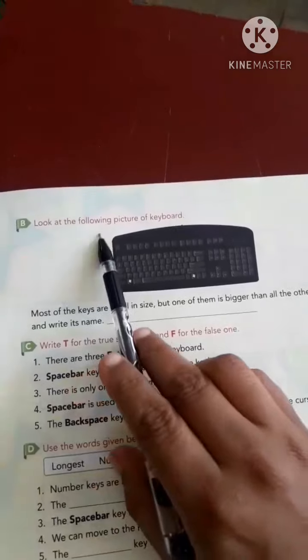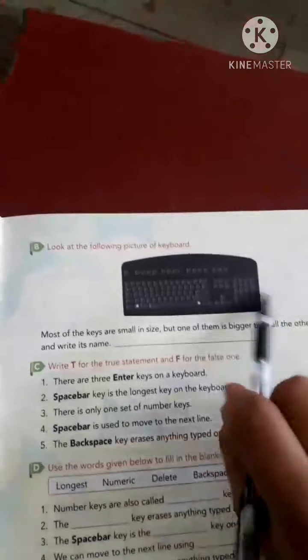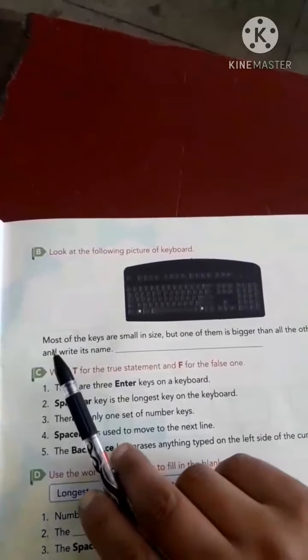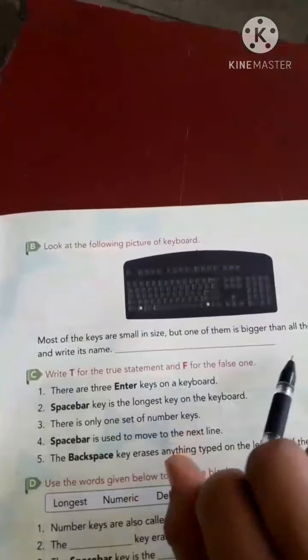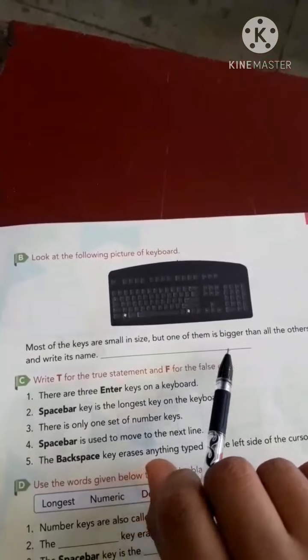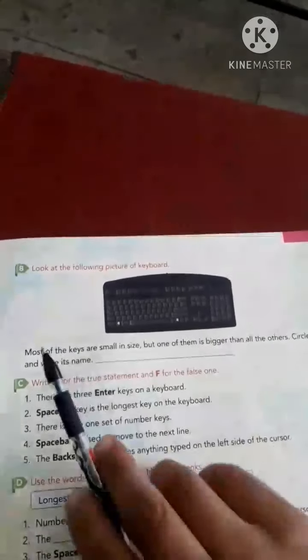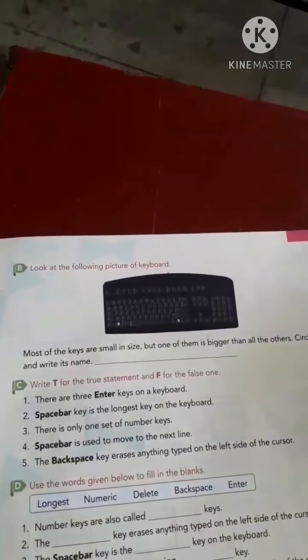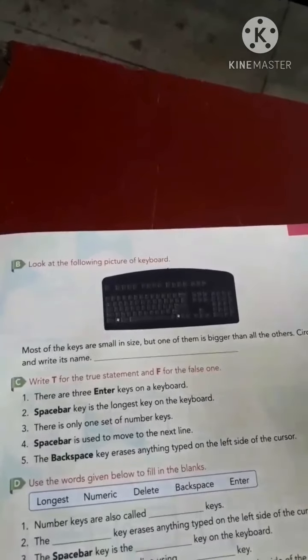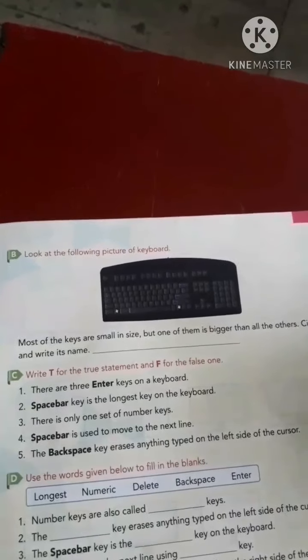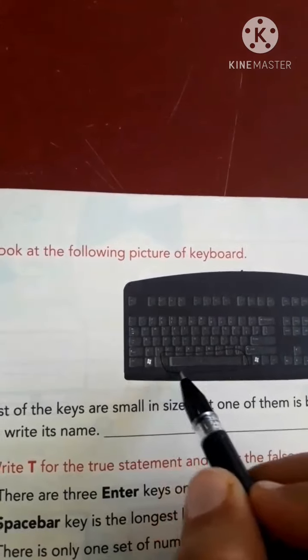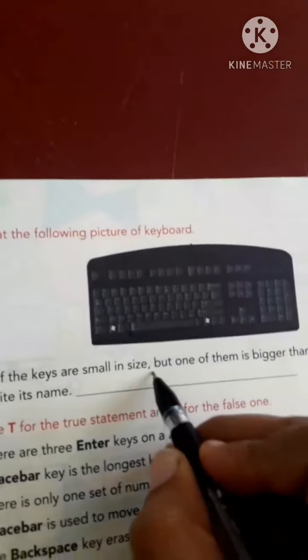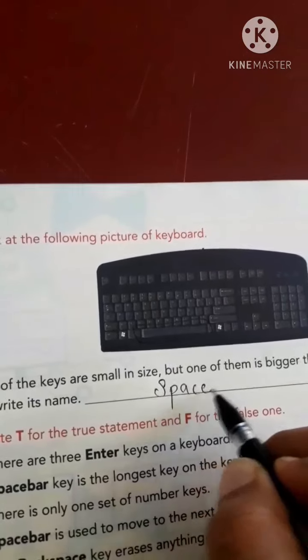Now B question is: look at the following picture of the keyboard. Most of the keys are small in size, but one of them is bigger than all the others — circle it and write its name. Which key is longer? Which key is bigger than all the others? Space bar. Circle it. This is the space bar and you will write here: space bar.